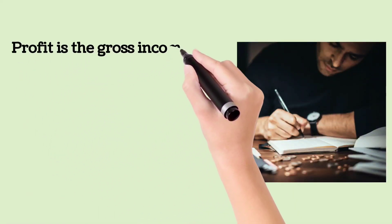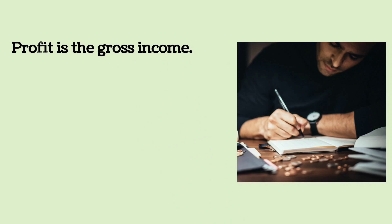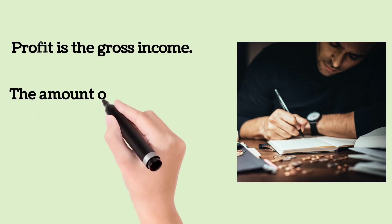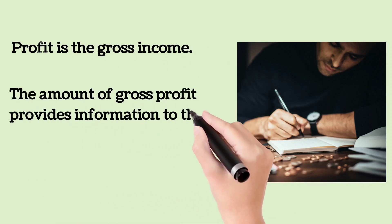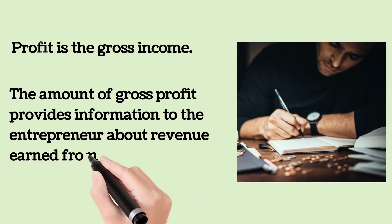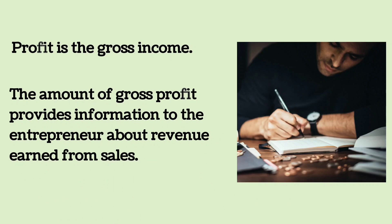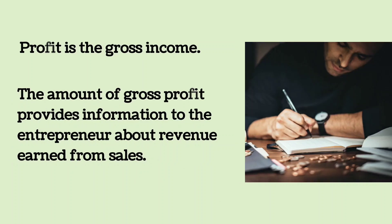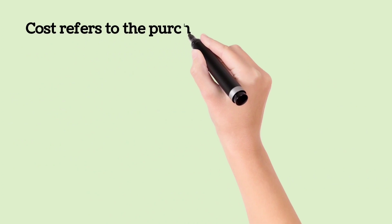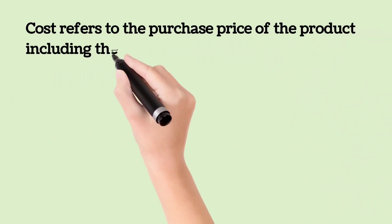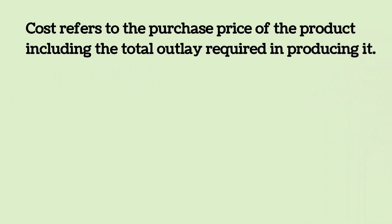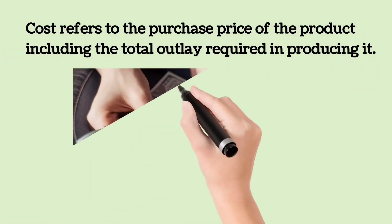Profit is the gross income. The amount of gross profit provides information to the entrepreneur about revenue earned from sales. Cost refers to the purchase price of the product including the total outlay required in producing it.